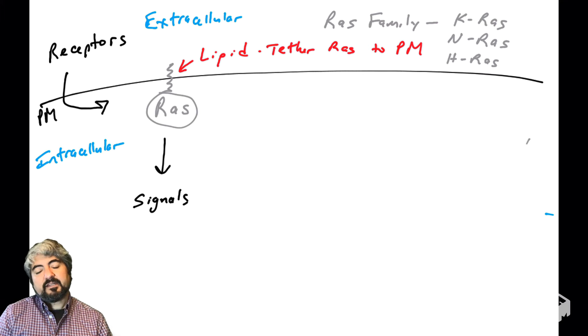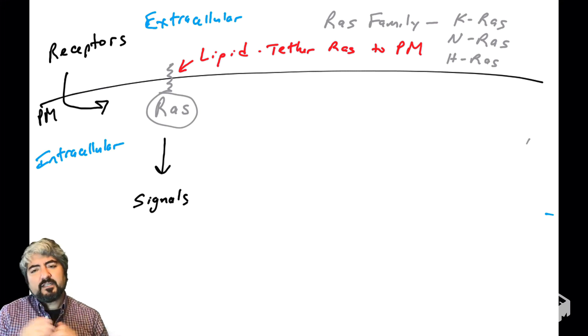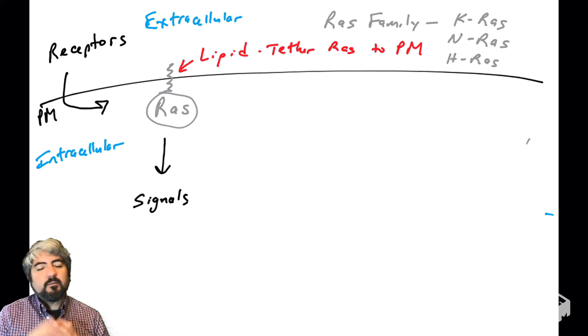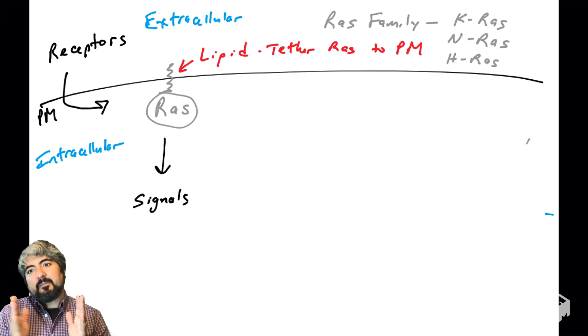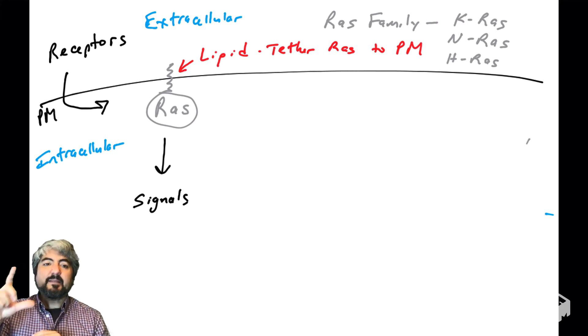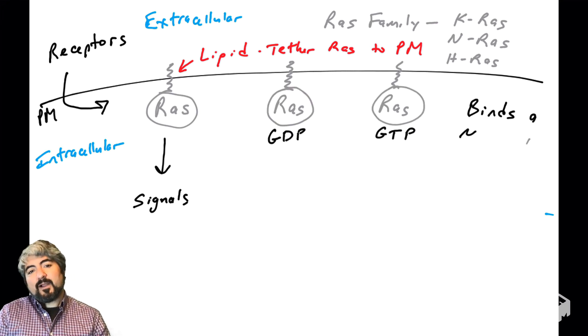It's tethered to the cytoplasmic side of the plasma membrane by a lipid. RAS is a protein but it is covalently conjugated to lipids. There are different lipids that RAS could be conjugated to—quite complicated lipid biology—but just know that RAS lives on the cytoplasmic side of the plasma membrane, tethered by the insertion of this lipid tail that is covalently attached to the protein.